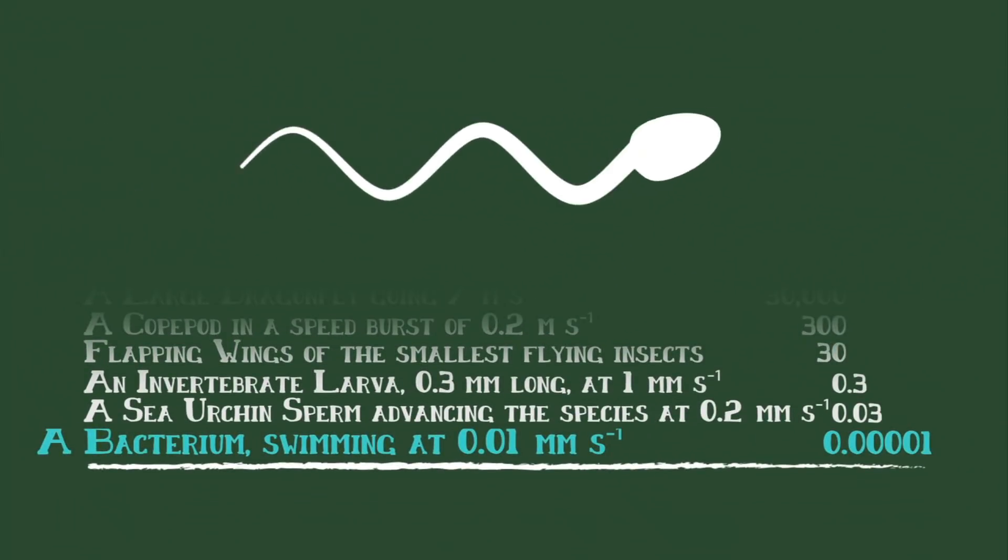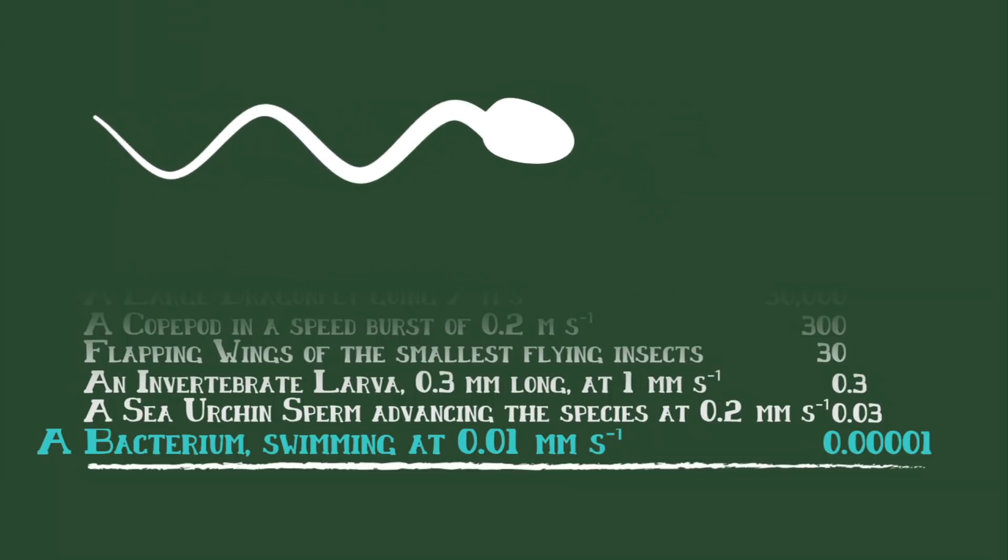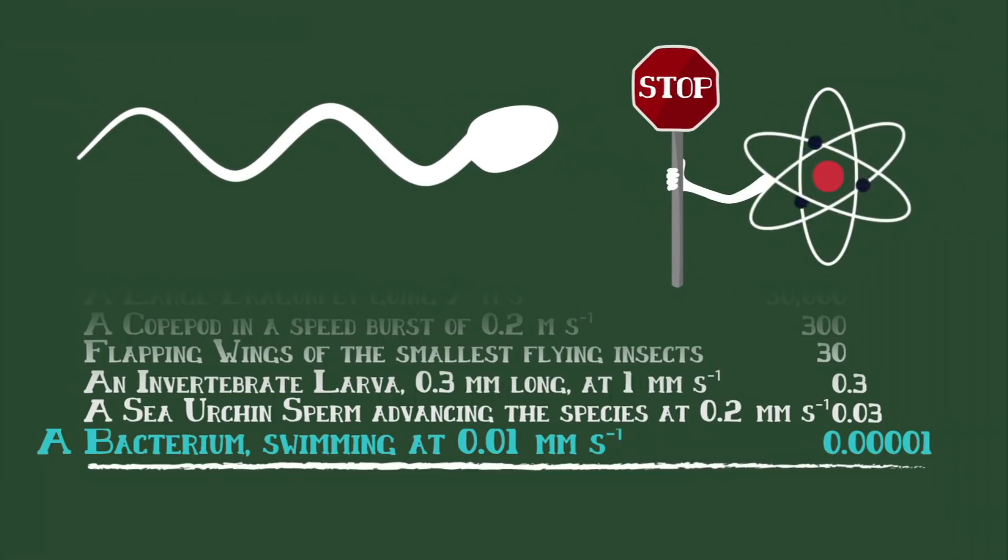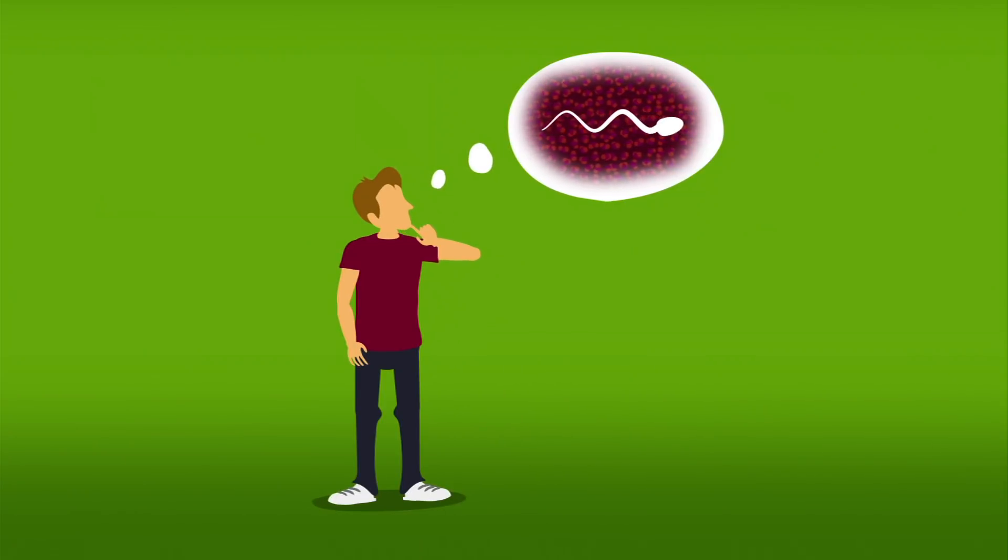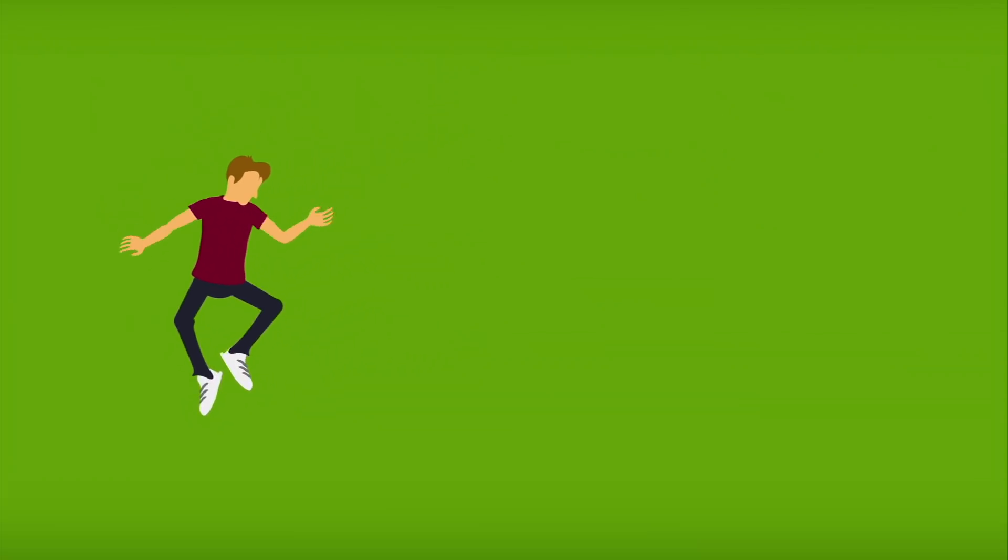Meanwhile, sperm live in a low Reynolds number world. If a sperm were to stop flapping its tail, it wouldn't even coast past a single atom. To imagine what it would feel like to be a sperm, you need to bring yourself down to its Reynolds number.